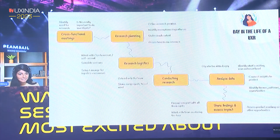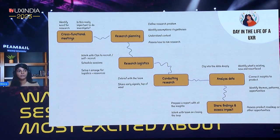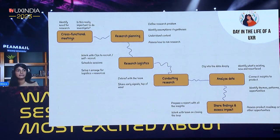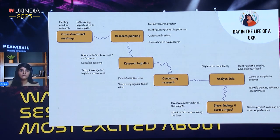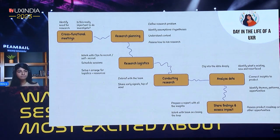There are so many facets to user research, and most of you here would have your own processes, but I want to start with sharing a glimpse of a day in my life. Whenever we start a research project, we want to understand more about the context. So we start with cross-functional meetings, then we identify the need for research and what needs to be investigated. Then we jump into research planning, where we define a research problem, identify assumptions and hypotheses, and understand how we can run the research. We then move on to research logistics, working with an ops team to help with recruiting participants, or finding other ways to recruit.